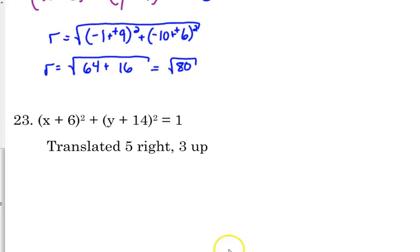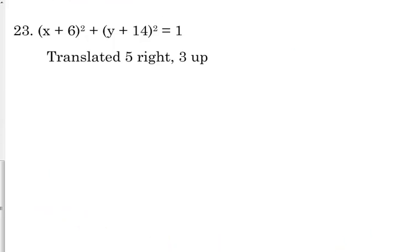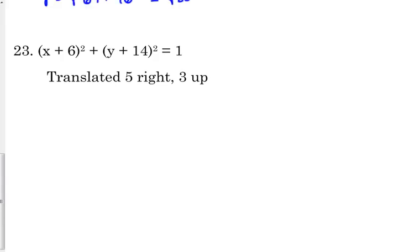One more thing that we need to do is we need to look at these in words. If they tell us how to move the circle, how does the formula change? So we have x plus 6 squared plus y plus 14 squared is equal to 1. That's our original equation, but we want to take that circle and we want to move it 5 units to the right and we want to move it 3 units up. I think a visual helps with this.